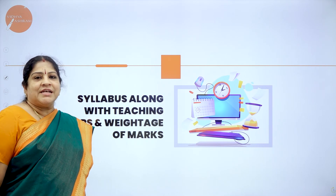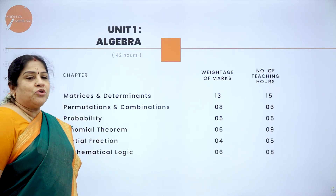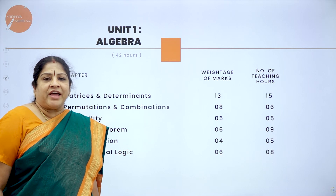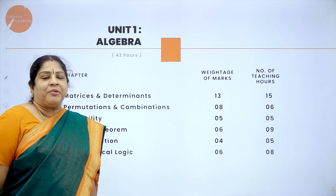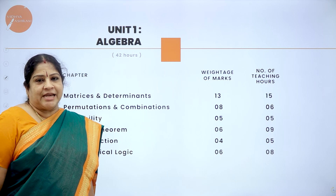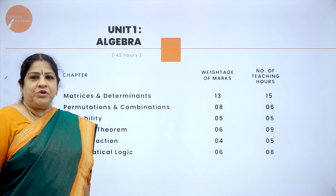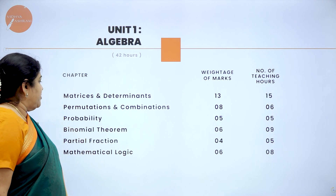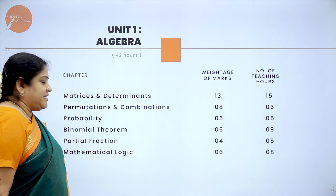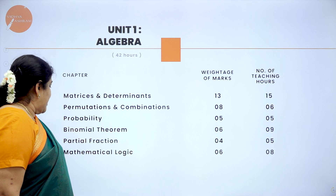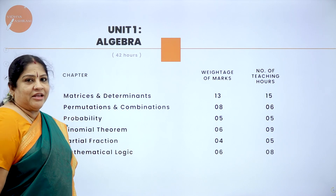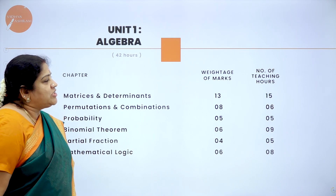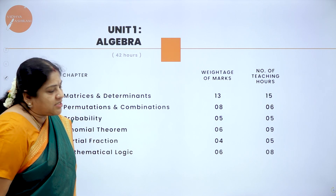First is the syllabus. Totally, in your syllabus, you have a total of 5 units comprising of 21 chapters. In Unit 1, you have matrices and determinants, permutation and combination, probability, binomial theorem, partial fractions, and mathematical logic. And you can clearly see the weightage of marks for each chapter.